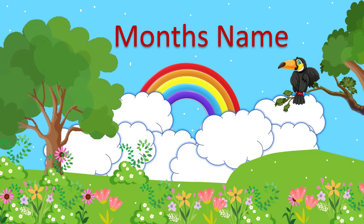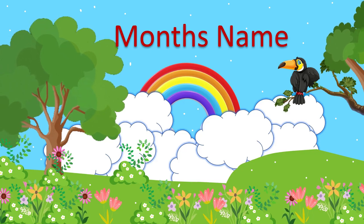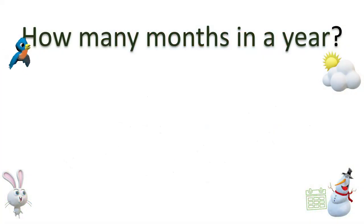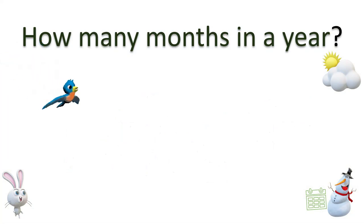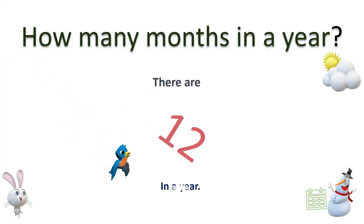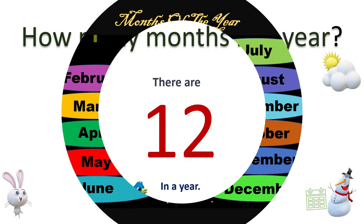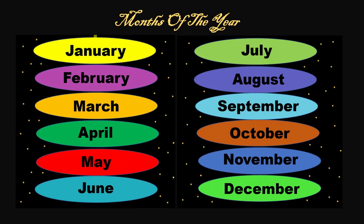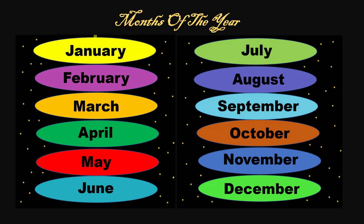Hello kids! Let's learn about the months of the year. Did you know how many months are in a year? There are 12 months in a year. The first month is January — J-A-N-U-A-R-Y — January. The second month is February.